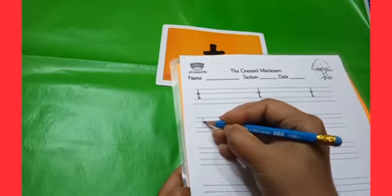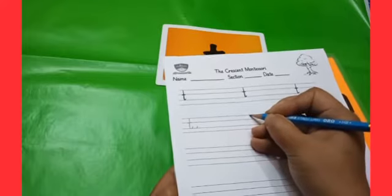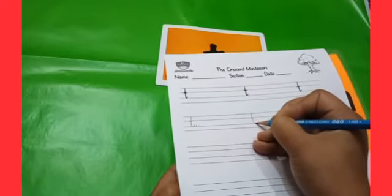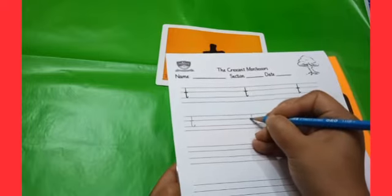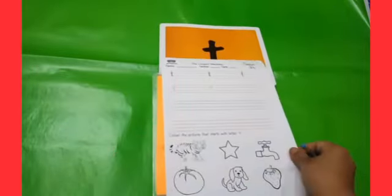and sleeping line on line number two. Now again see: standing line, stop, make a curve and a kick, sleeping line on line number two. This is the way how you will write on your worksheet. Now you will color